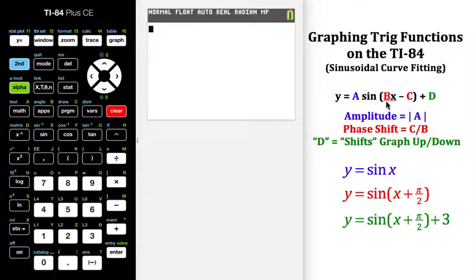The numbers B and C, if I divide C divided by B, that gives me the phase shift. This tells me how the graph shifts left or right from the base graph, and the plus D tells me how the graph shifts up or down.